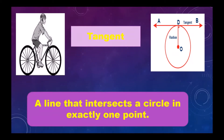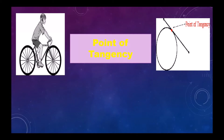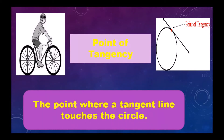Tangent: a line that intersects a circle in exactly one point. See, this is a line which is intersecting the circle only in one point, that is D. Point of tangency: the point where a tangent line touches the circle.